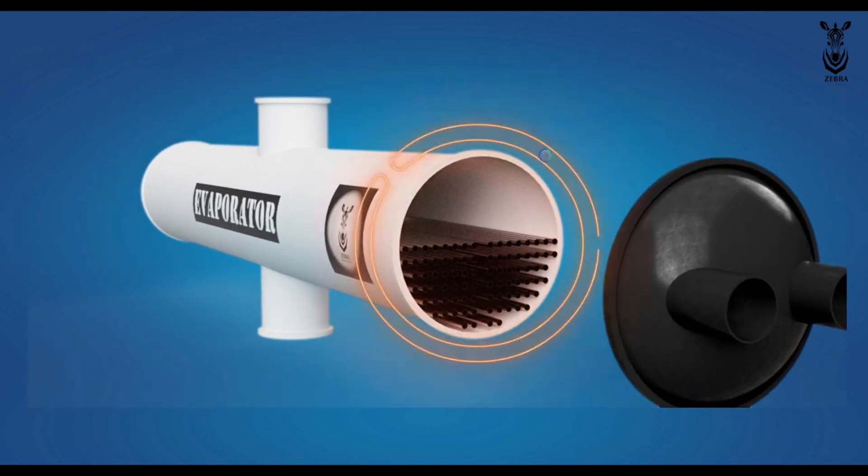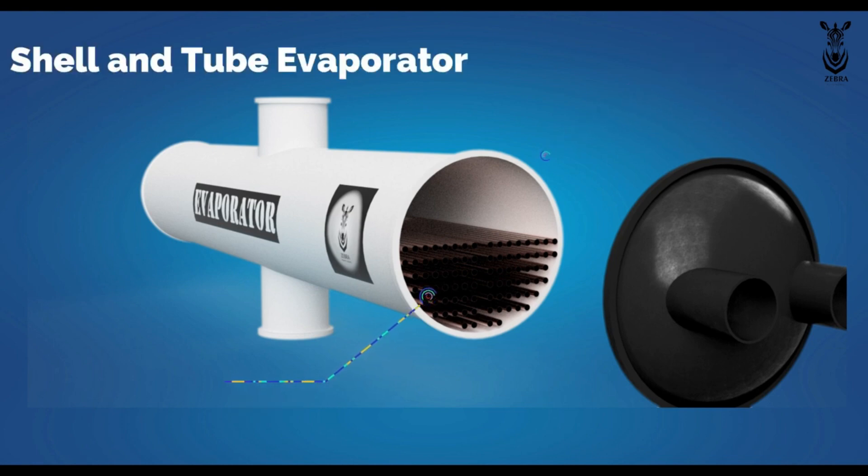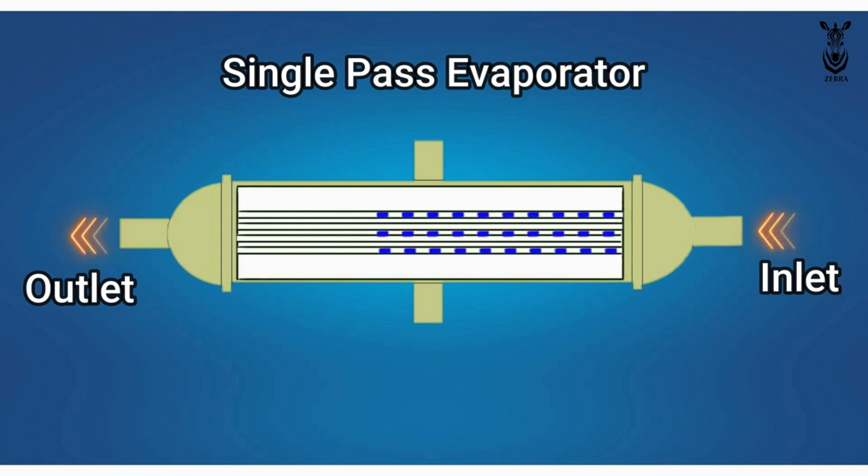The outside of this evaporator is in the form of a shell and inside there are coils. This is why we call it a shell and tube evaporator. If water enters from one side and exits from the opposite side, it is a single pass evaporator.